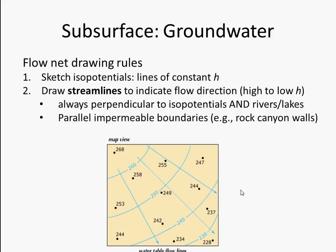Flow net drawing rules: first, sketch out the isopotentials using information either from piezometers if you're doing a vertical profile, or from monitoring wells and water table height if you're doing a map view flow net. Then draw in the streamlines to indicate flow direction, moving from high to low hydraulic head. These streamlines are always perpendicular to isopotentials and to rivers and lakes, because rivers and lakes have constant hydraulic head — you're drawing flow lines perpendicular to any line of constant hydraulic head.